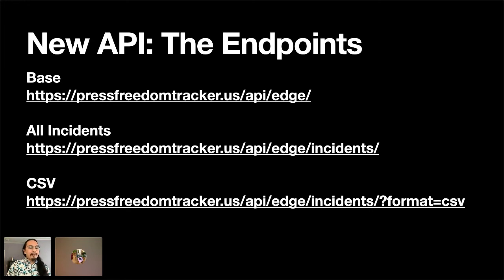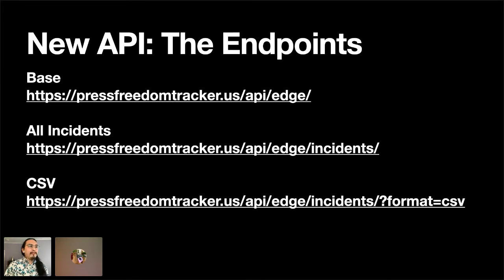If you visit, you'll notice that the first URL is a holding page listing different endpoints. Currently we only have one endpoint that supports fetching data about incidents, but we have plans to add a categories endpoint as well. If you want to download all incidents right now, the second URL will give you a complete dump of all 1,000-plus incidents in our database. The default response is JSON, but if you prefer CSV, you can add the format=CSV parameter to the end — and as a bonus, that'll be a much smaller file size.